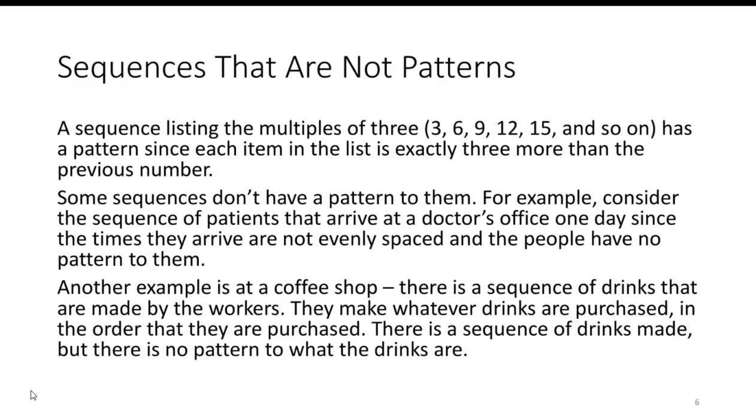Another example is at a coffee shop. There is a sequence of drinks that are made by the workers. They make whatever drinks are purchased in the order they are purchased. There is a sequence of the drinks made, but there is no pattern to what the drinks are.